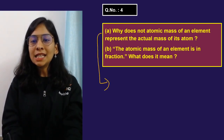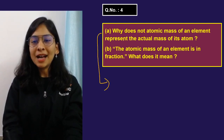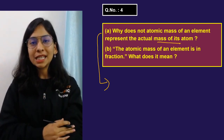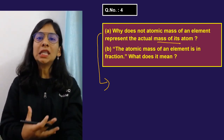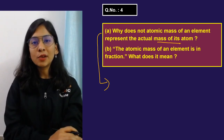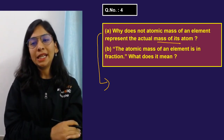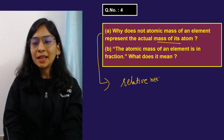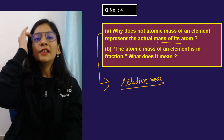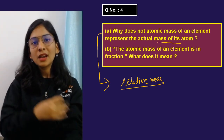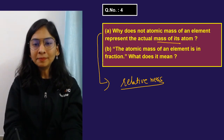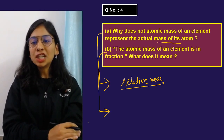Question: why does atomic mass of an element not represent the actual mass of its atom? The actual mass of an atom is very small and tedious to remember. For convenience, we calculate mass in terms of relative mass by taking C-12 as the reference, because it's easy to remember a mass that is close to a whole number.